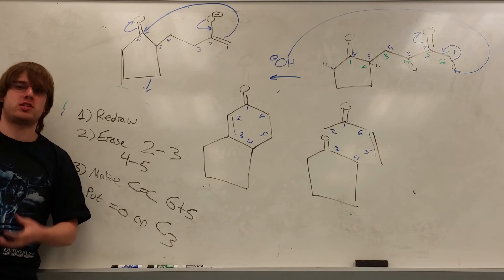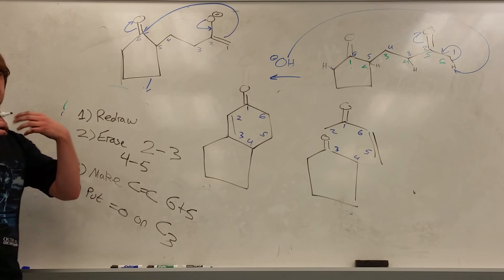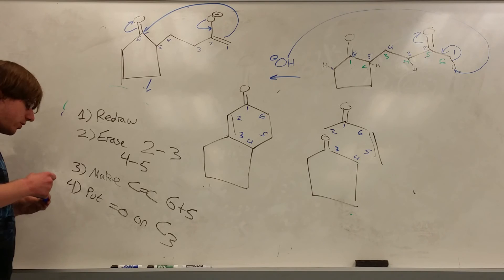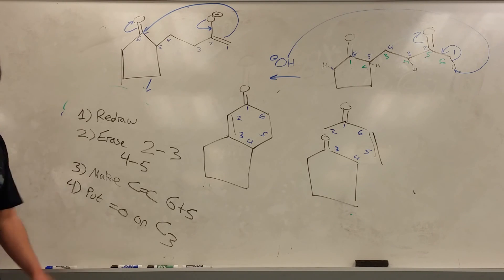But until that point, that is the gist of a Robinson annulation. It always makes a six-membered ring. And if you follow these four steps, you can break it apart to figure out the pieces that came together to make it. And with that, that about takes care of chapter 19. So good luck, everyone.